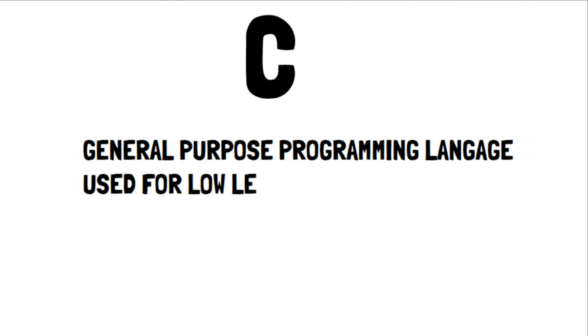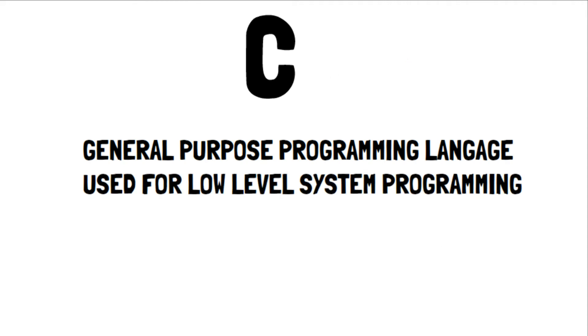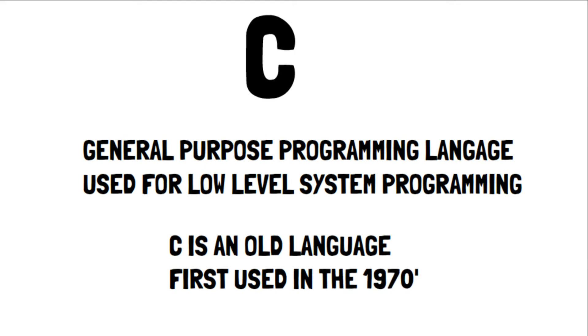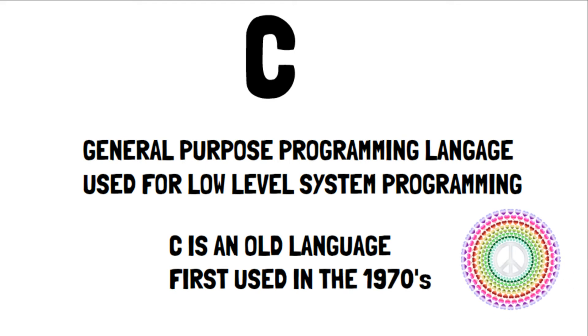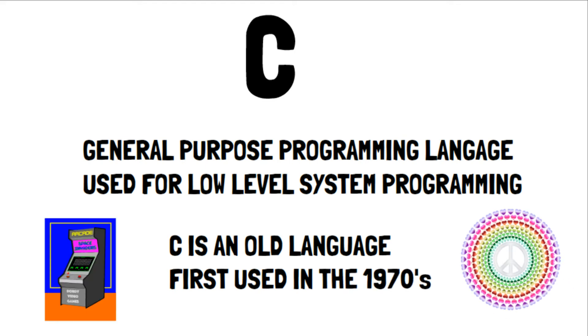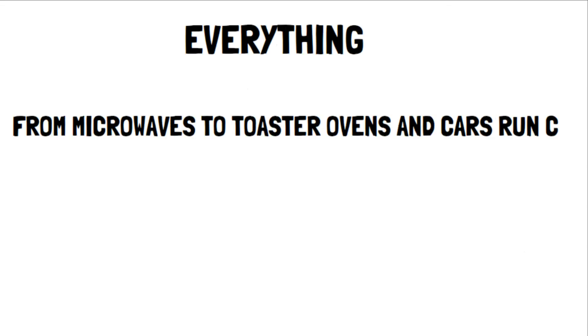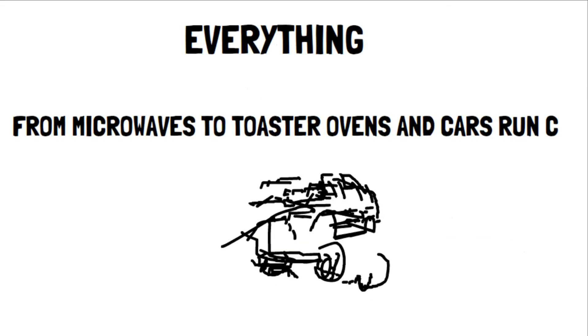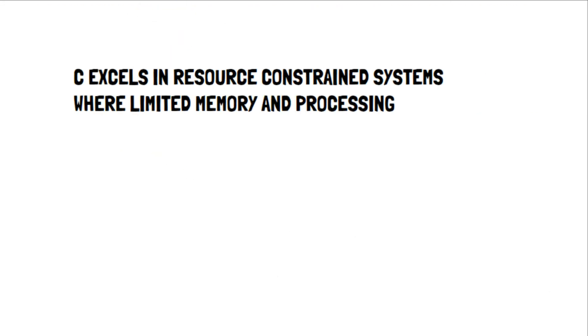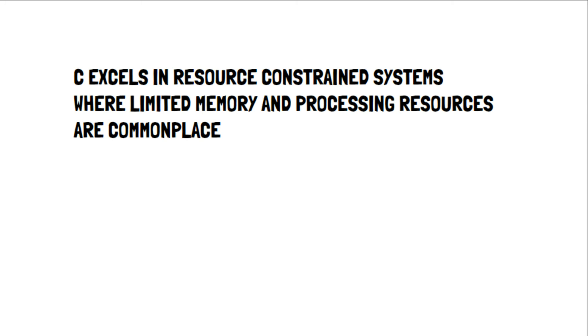C is a general purpose procedural programming language that is used for low level system programming. C is an old language, first used in the 1970s, and for decades has been going strong. Everything from microwaves to toaster ovens and cars run C, because C excels in resource-controlled systems where limited memory and processing resources are commonplace.